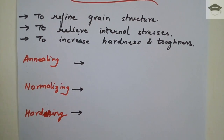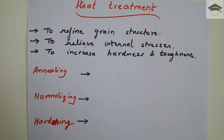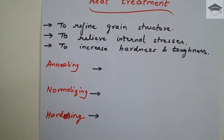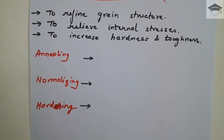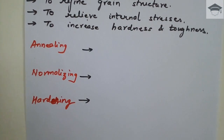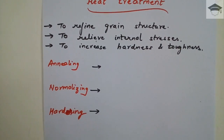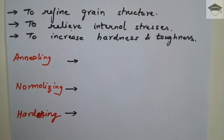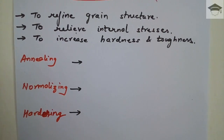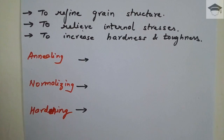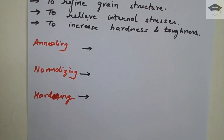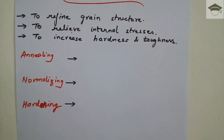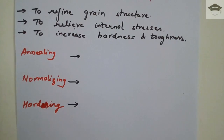The second process is normalizing. In normalizing, the component is placed in air, or a blower is applied to force air over the component. Normalizing produces a component with a softer outer surface and a tough, hard inner core. The outer surface of the normalized component appears smooth.